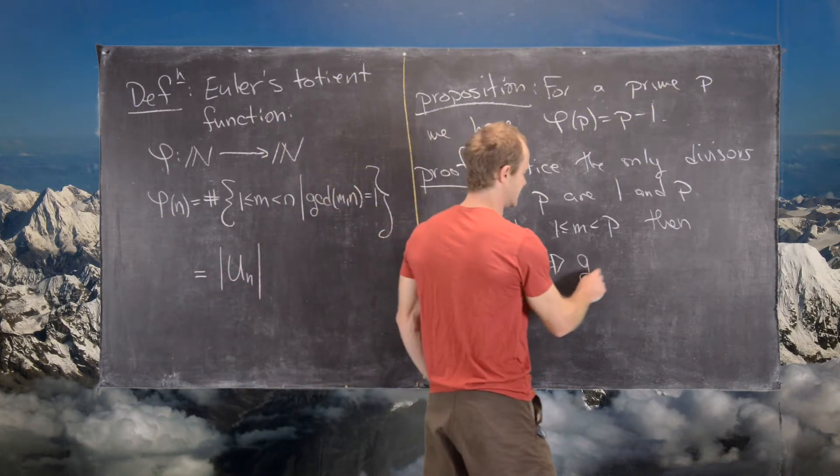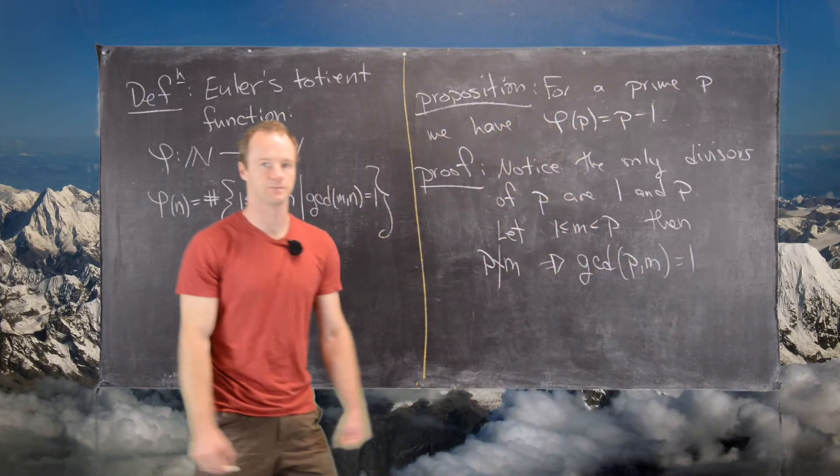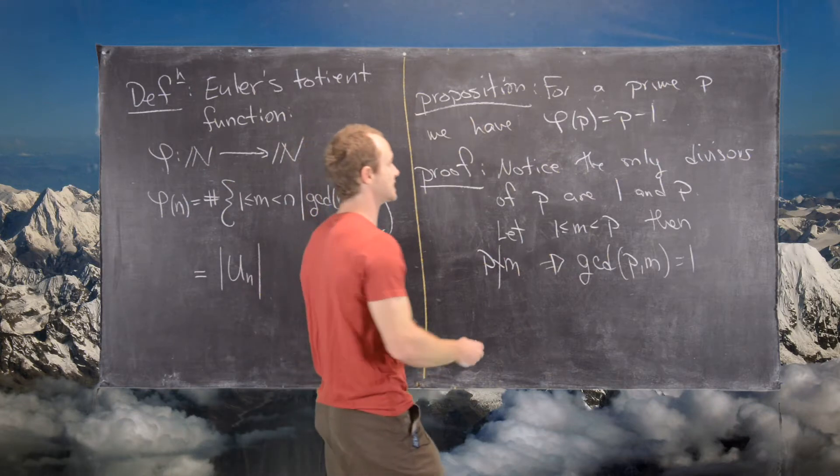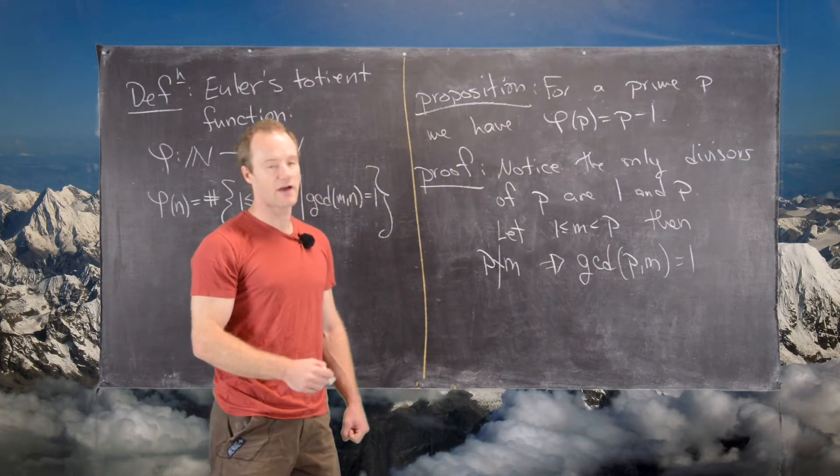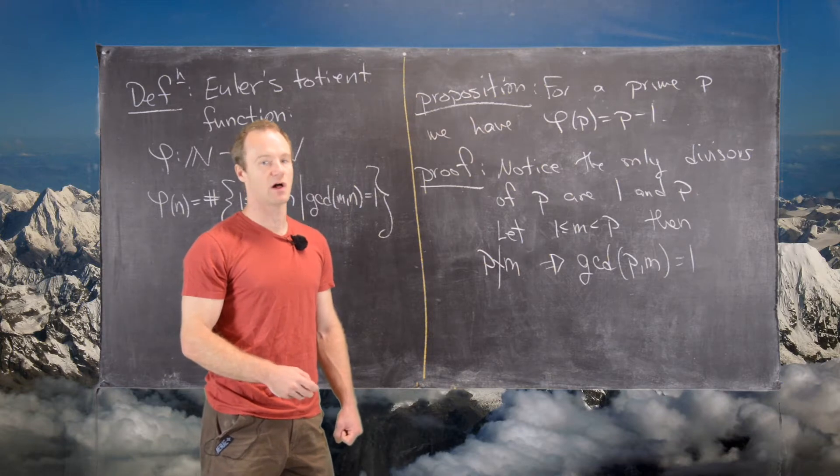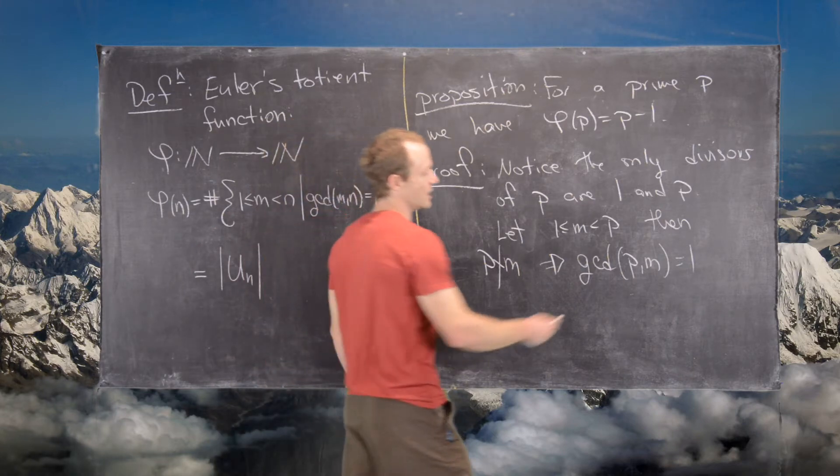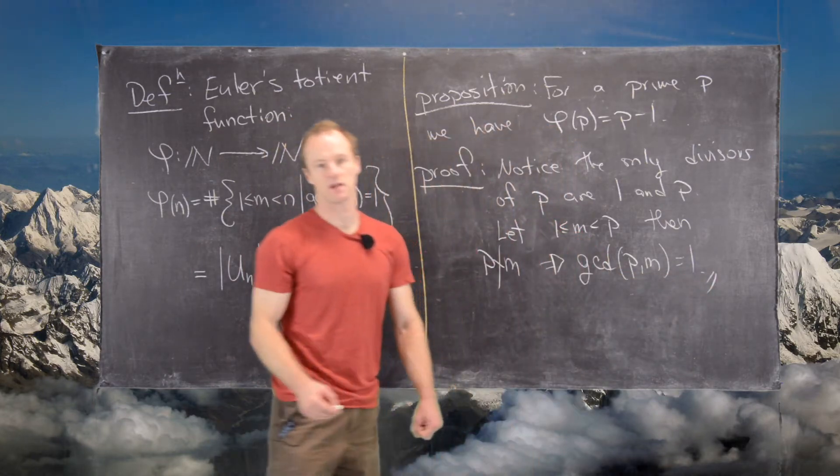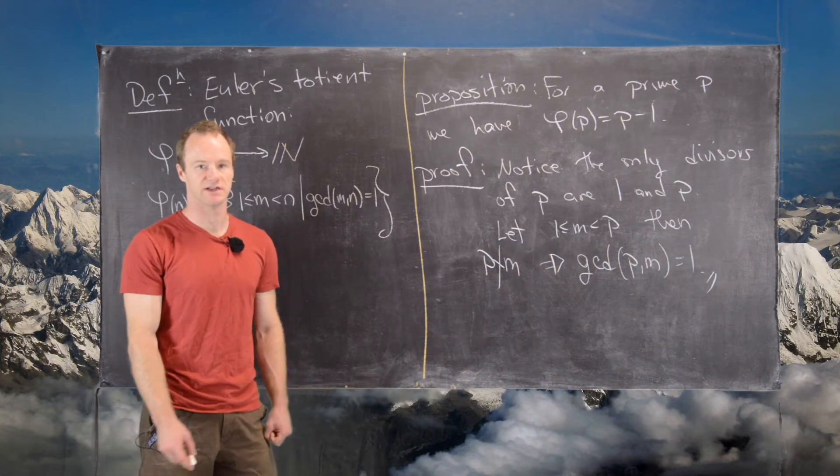So that tells us that the GCD of P and M equals 1, which tells us that the set containing everything relatively prime to P that's smaller than P includes all numbers 1 to P minus 1, from which our result follows. So I will write down all the details, but I think we've said all the details verbally.